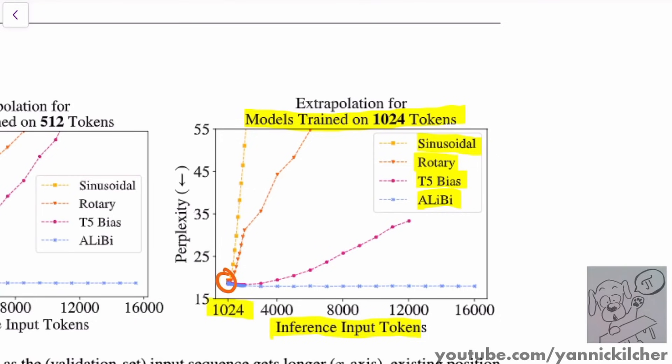However, when they inference, when they make do inference on longer tokens, you can see right here, everything performs quite well, this is perplexity, lower is better. If you go longer, the sinusoidal embeddings shoot up immediately, so they fail immediately. Also, the rotary embeddings, they don't seem to cope super well, a bit more, but not super well. So even if you go double the sequence length, they sort of fail.